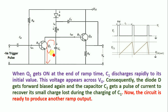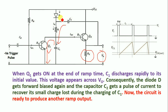When transistor Q1 turns ON, capacitor C1 discharges very rapidly through transistor Q1. This discharge appears across the output voltage V0, that is across resistance RE. So capacitor C1 charges and then discharges rapidly. When Q1 is in the turn-off condition, C1 is charged by capacitor C2.